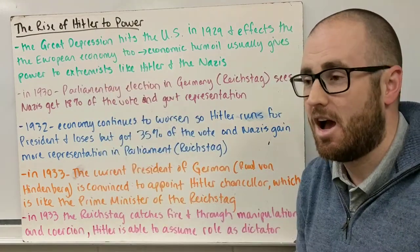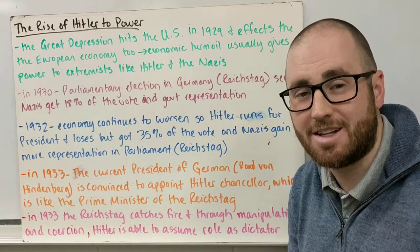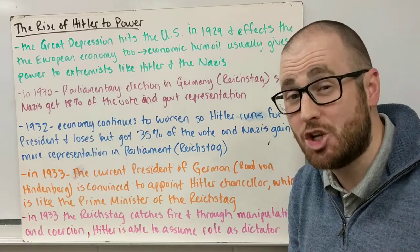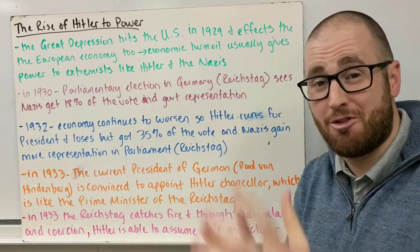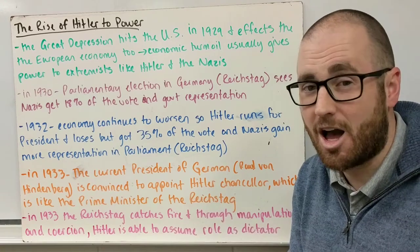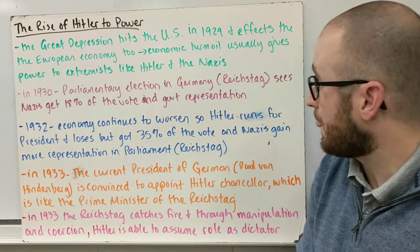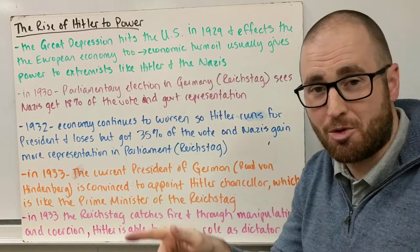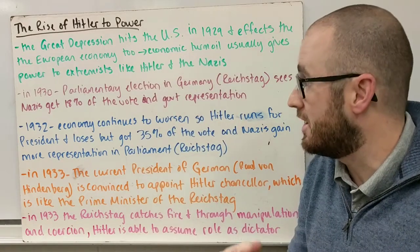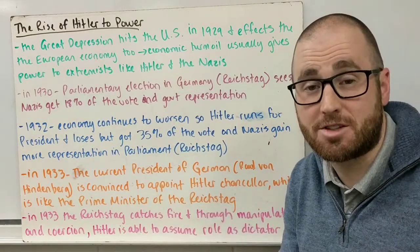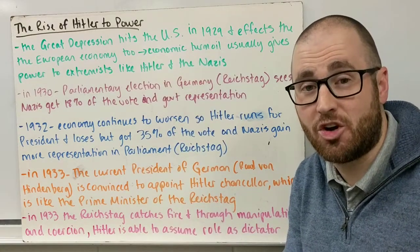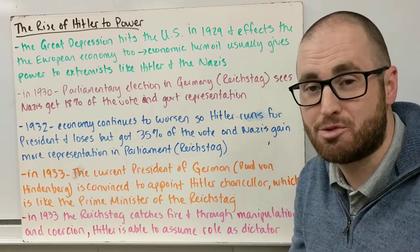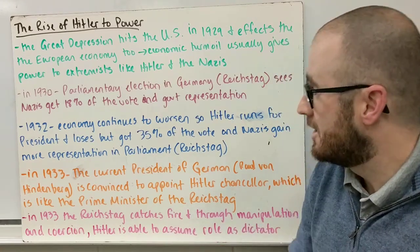Then the Great Depression hit. It hit the United States in October of 1929 on a day called Black Tuesday, and it also affected the European economy, including Germany. We know that economic turmoil and depression usually give power to extremists like Hitler and the Nazis, who want to seize on people's emotions and poor living conditions.